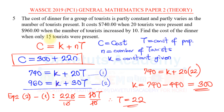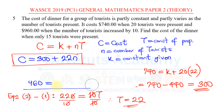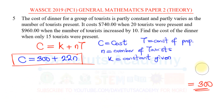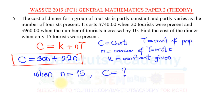The question asks for the cost when there are 15 tourists. All we need to do is substitute N = 15 into the equation. So C = 300 plus 22 times 15. Let's calculate 22 times 15.